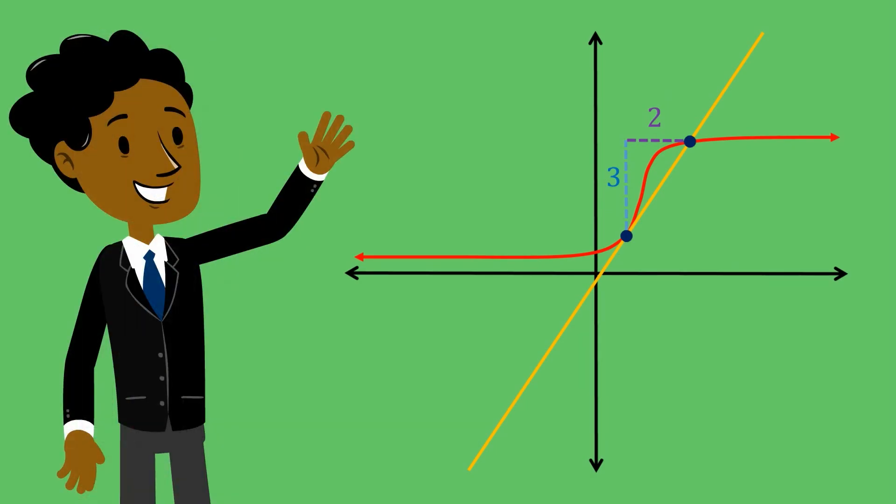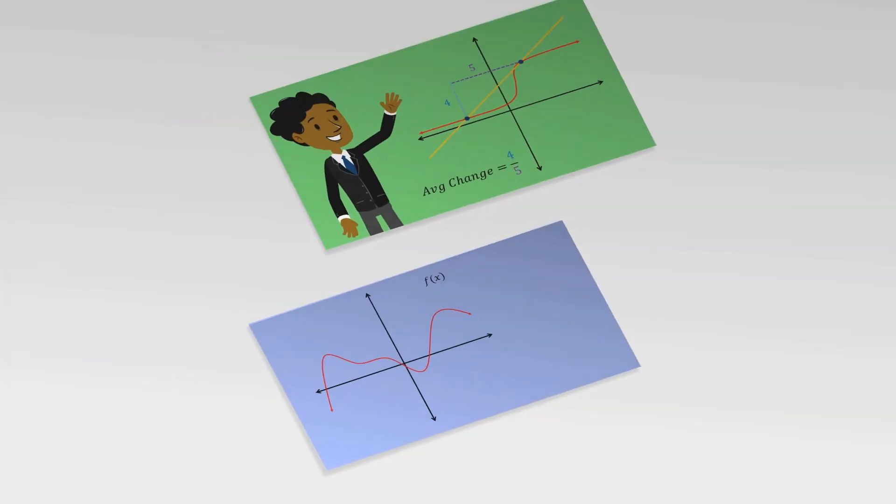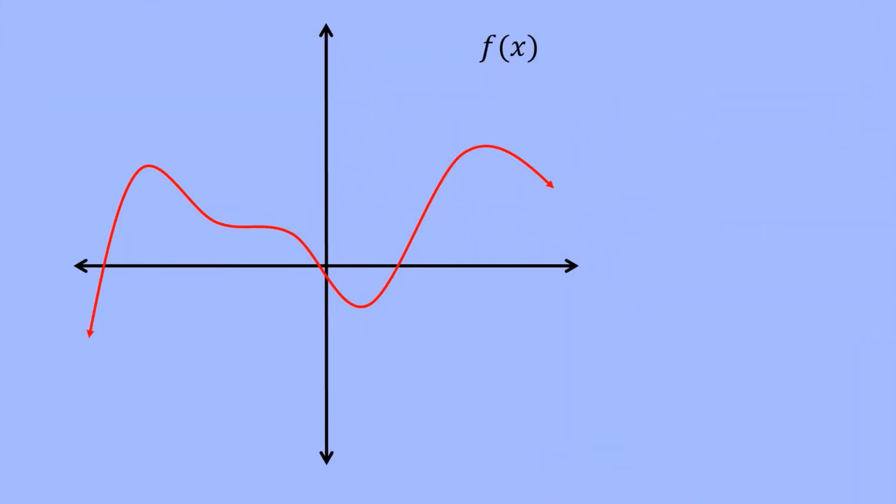But it's only an approximation right now. If we change the two points we are using we will get a different value for the slope of the line. What this line really tells us then is the average change of the function. How much the function has changed in the y direction versus the x direction between the two given points. Let's play around with this idea so that it makes a bit more sense.